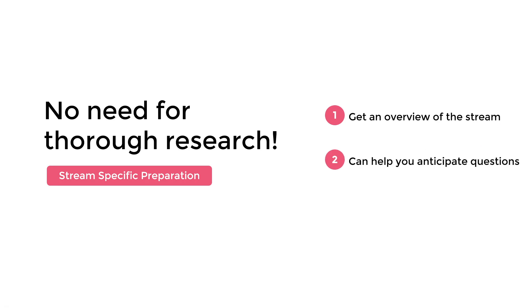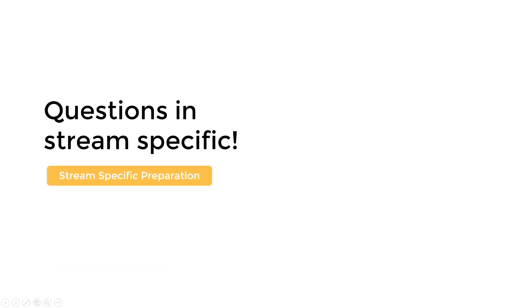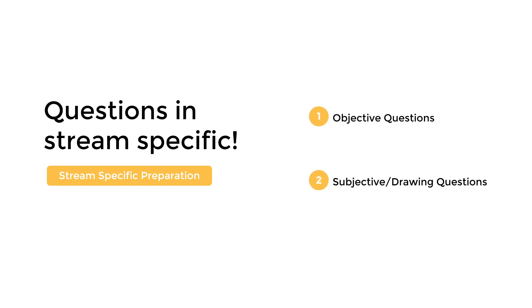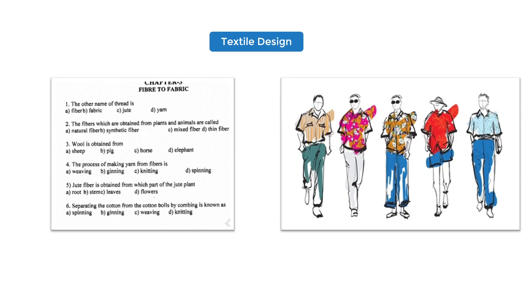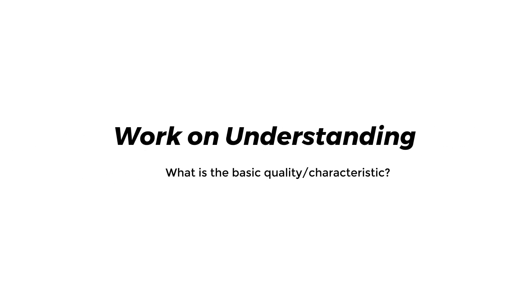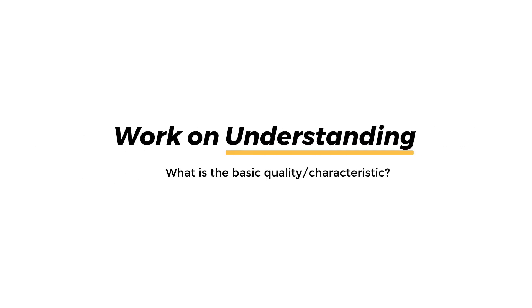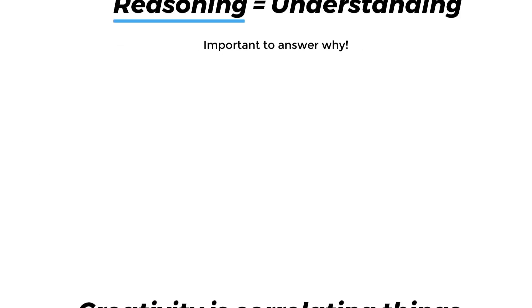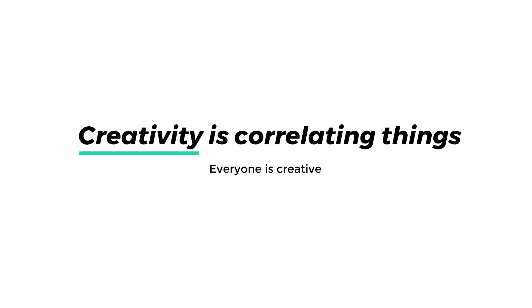Once you understand this, you can anticipate how they are going to test you on these basics. Stream-specific questions are not always about drawings — the questions can be a mix of objective and subjective. For example, questions in textile design can be on theory of fabrics and yarns and can also include garment design questions. To recap: in the next few weeks, work on knowledge and understanding, reasoning, and creativity. Develop knowledge through reading about the stream; reasoning develops as understanding improves; and creativity is about correlating different streams.